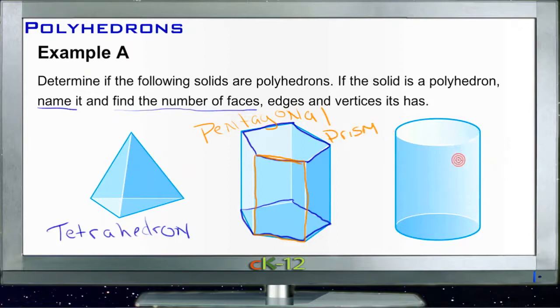This last one actually doesn't qualify as a polyhedron. It is a cylinder, but a cylinder is not an example of a polyhedron because it isn't made of specific flat-sided shapes.